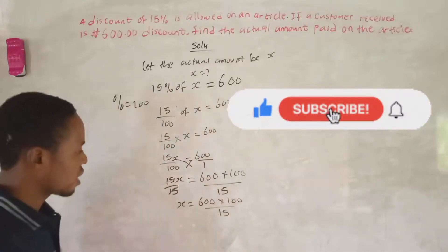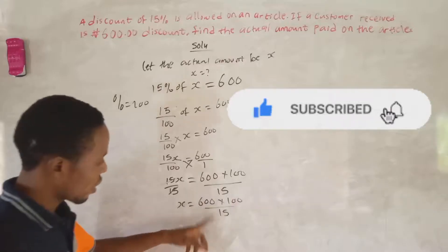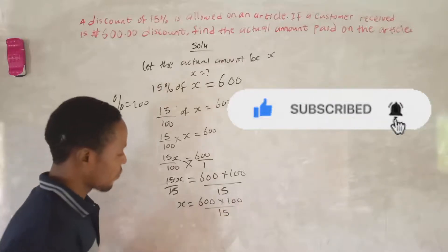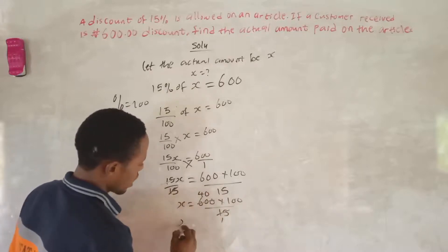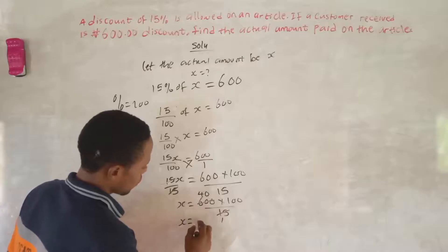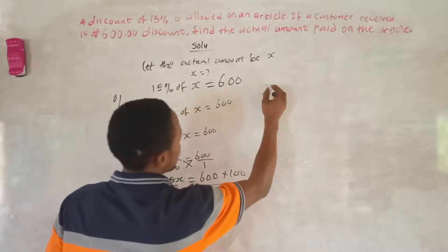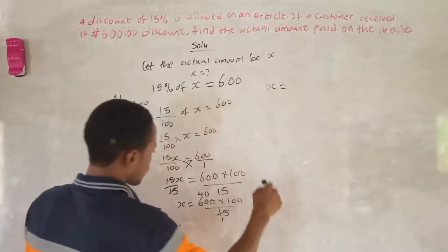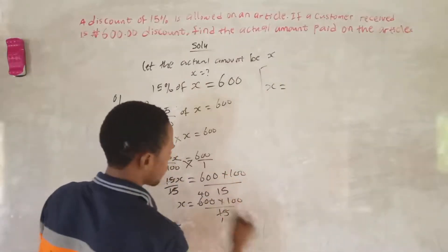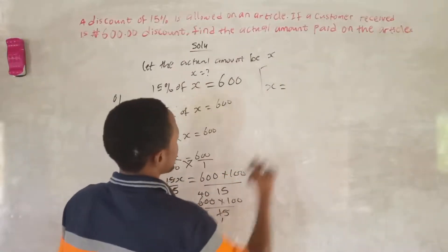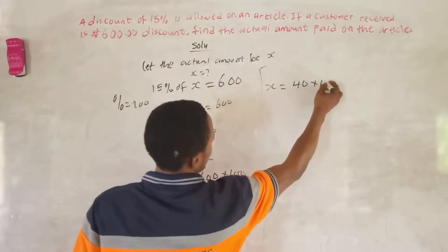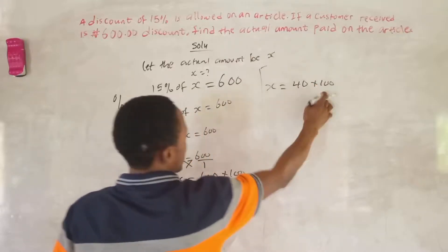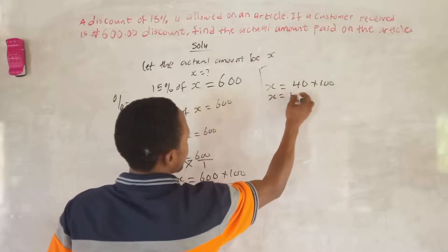15 can go into 600. 15 into 600 gives us 40. So S is equal to 40 times 100, which gives 4000.